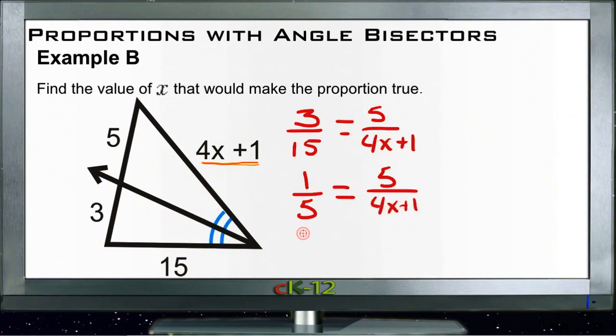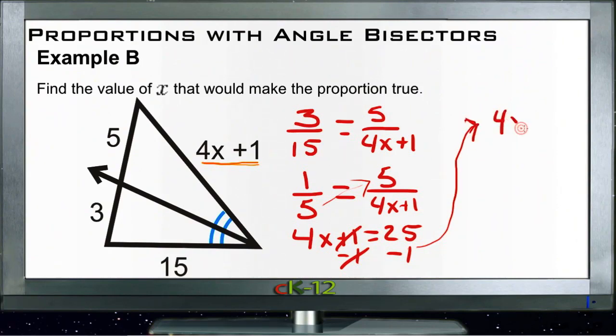Now we can cross multiply and we just get 4x plus 1 on the one side. That's kind of nice, and that's equal to 5 times 5 which is 25. Subtract 1 from both sides. 25 minus 1 is 24, so now we'll take this and we'll kind of move up over here and we'll have 4x is equal to 24.